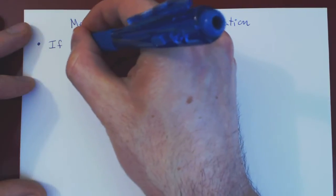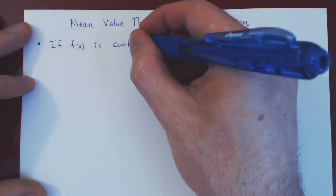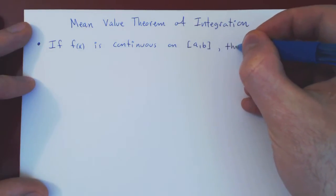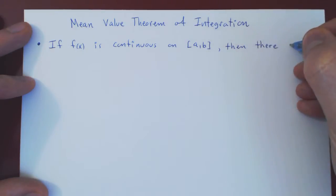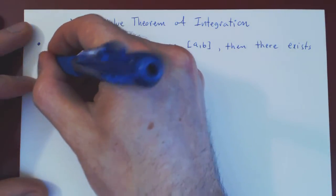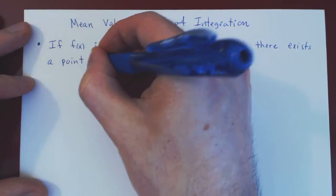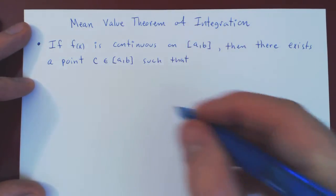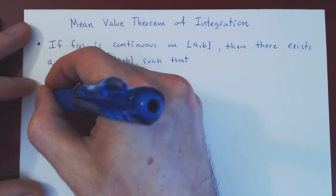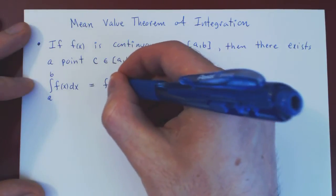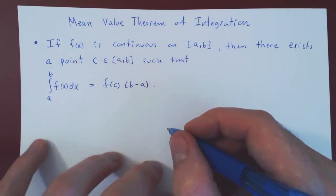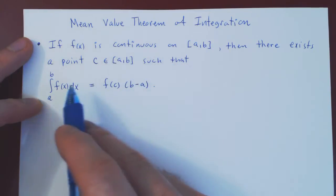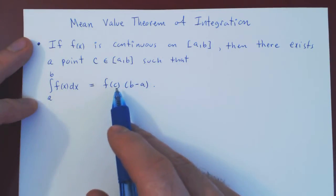Here's the statement: if f of x is continuous on the interval from a to b, then there exists a point, which we'll call c, that lies within the interval a to b, such that the definite integral of f of x from a to b is exactly equal to f of c times b minus a. So if f of x is continuous on [a, b], there must exist at least one point between a and b such that the integral of f of x from a to b equals f of c times b minus a.